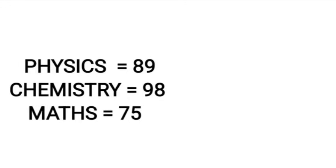Your KCT rank and college selection will be based on these three subjects. In PUC, Physics, Chemistry, and Maths — plus one more subject, either Computer or Biology — but Physics, Chemistry, and Maths in Part B is very important. Let's consider an example. They take your Physics mark, Chemistry mark, and Maths mark, divide by three, take an average, and that gives 50% weightage along with your KCT mark for the other 50%.